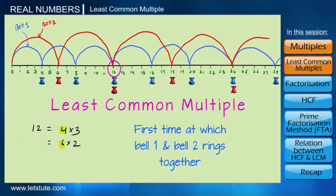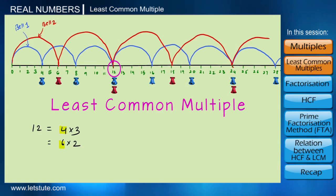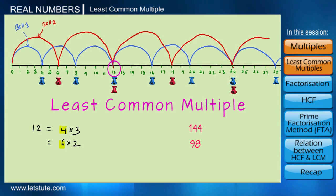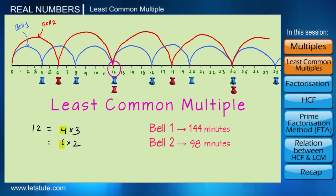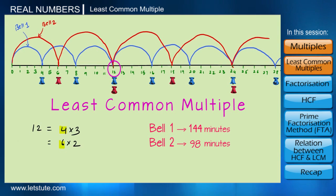This method of listing multiples works well for small numbers, but it becomes difficult for bigger numbers like 144 and 98. If Bell 1 rings every 144 minutes and Bell 2 rings every 98 minutes, it would be very difficult to visualize the situation. So another way of finding the least common multiple is by factorization.